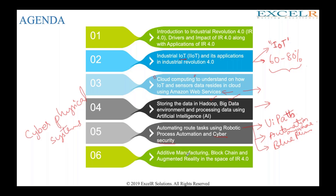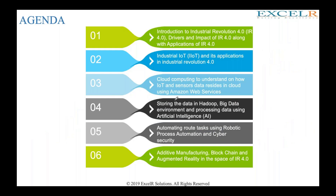We will understand theoretically about applications of additive manufacturing, blockchain, and augmented reality in the space of IR 4.0. Additive manufacturing involves 3D printing — 4D printing is round the corner. 3D printing can help you manufacture organs such as a heart that can be transplanted, or a kidney that can be transferred. However, you cannot expect that 3D printed kidney to function like a human kidney — for example, in terms of contraction.